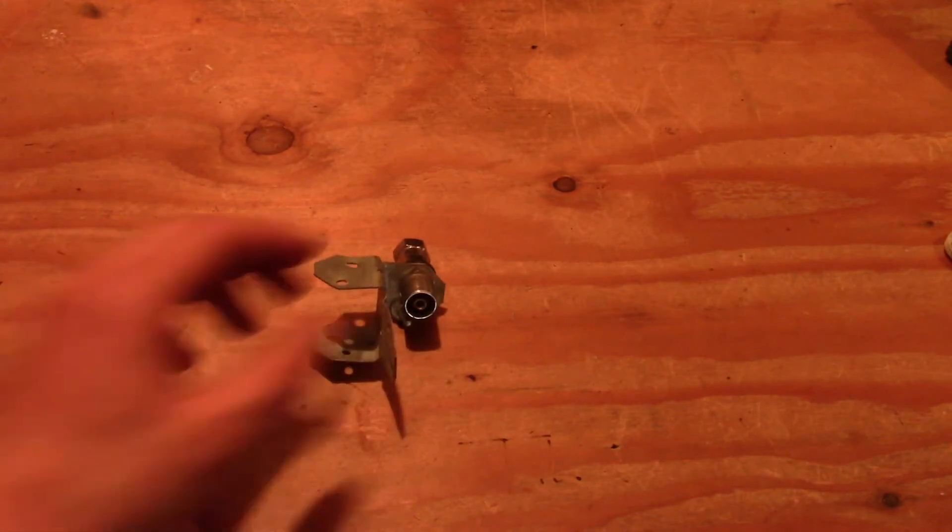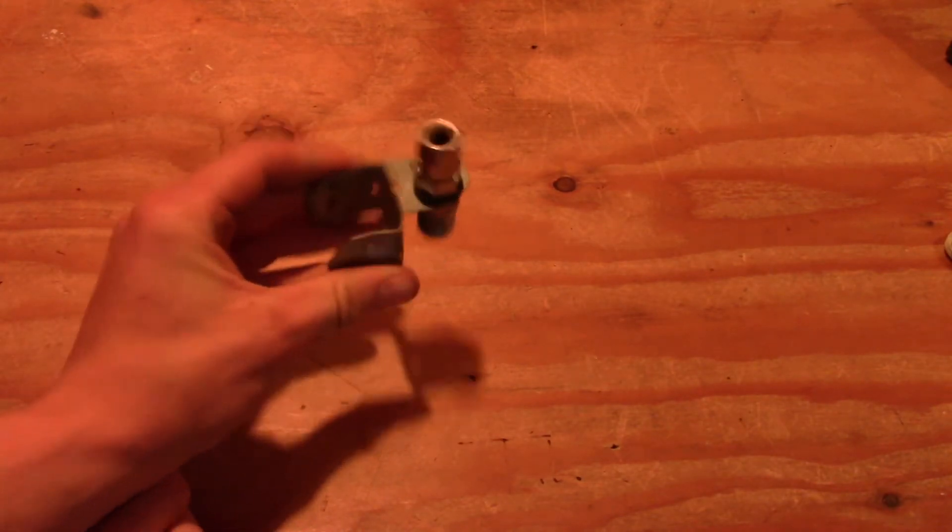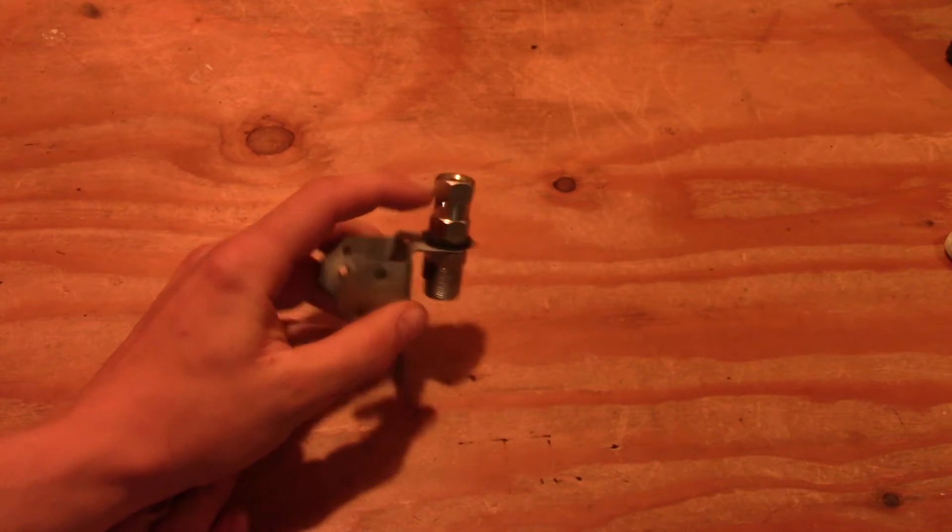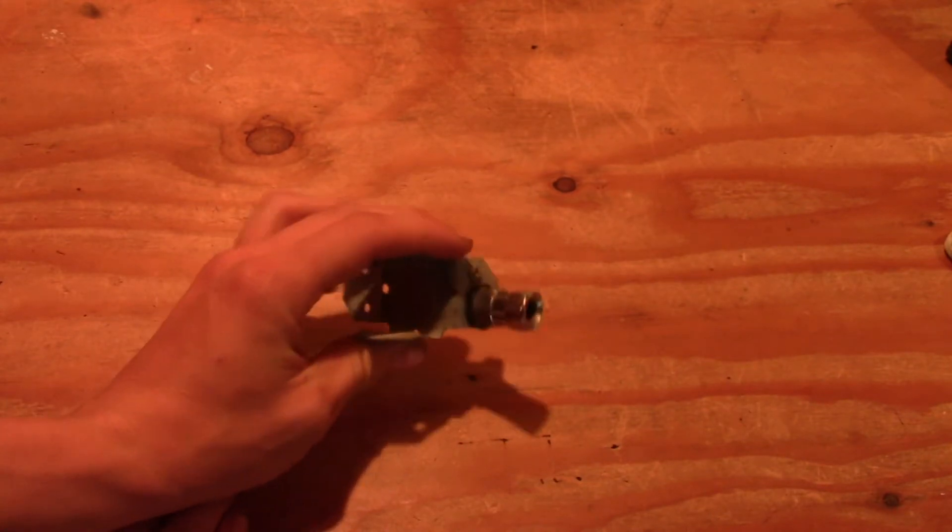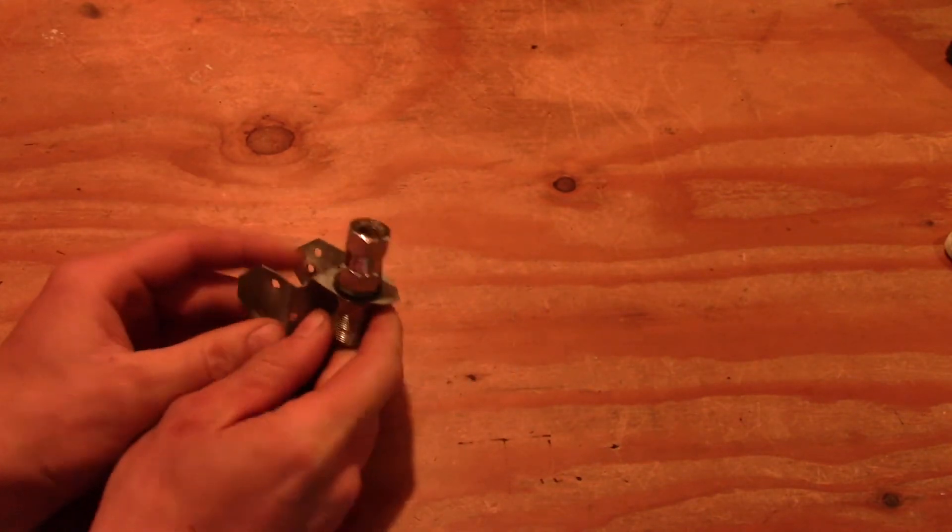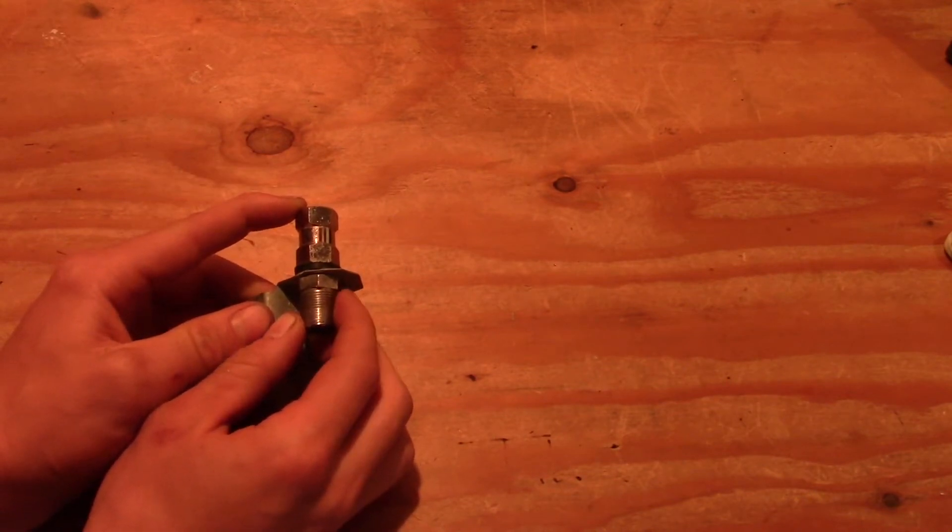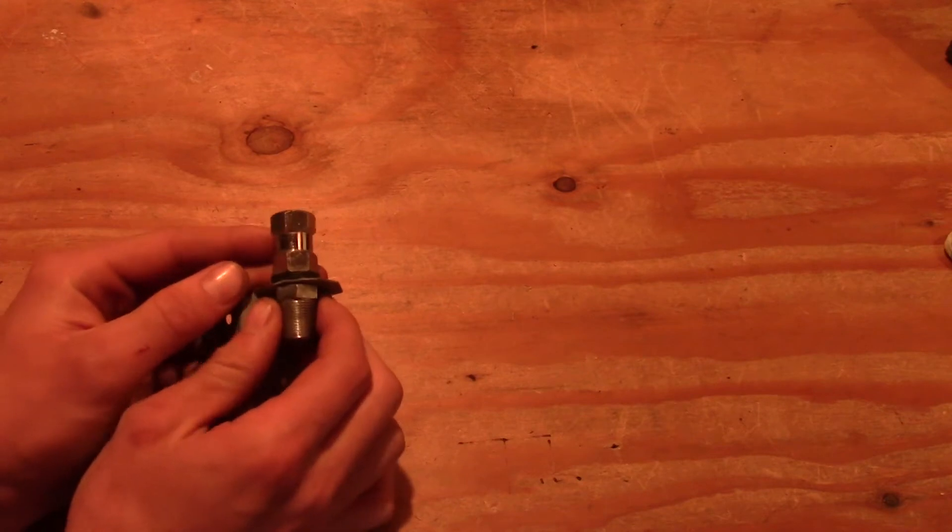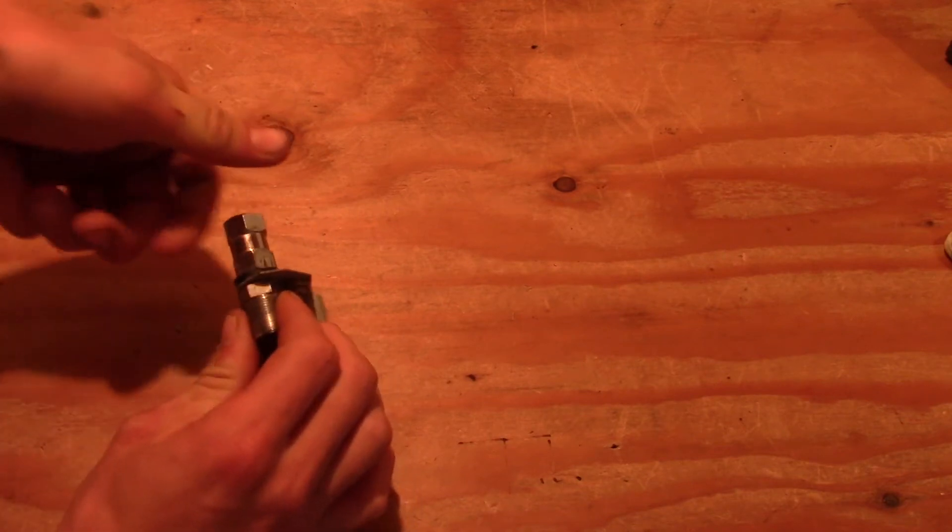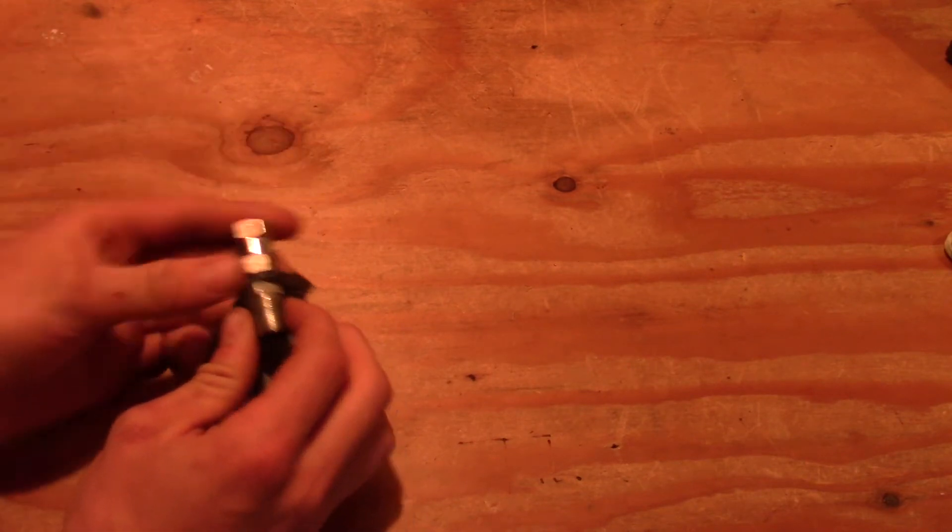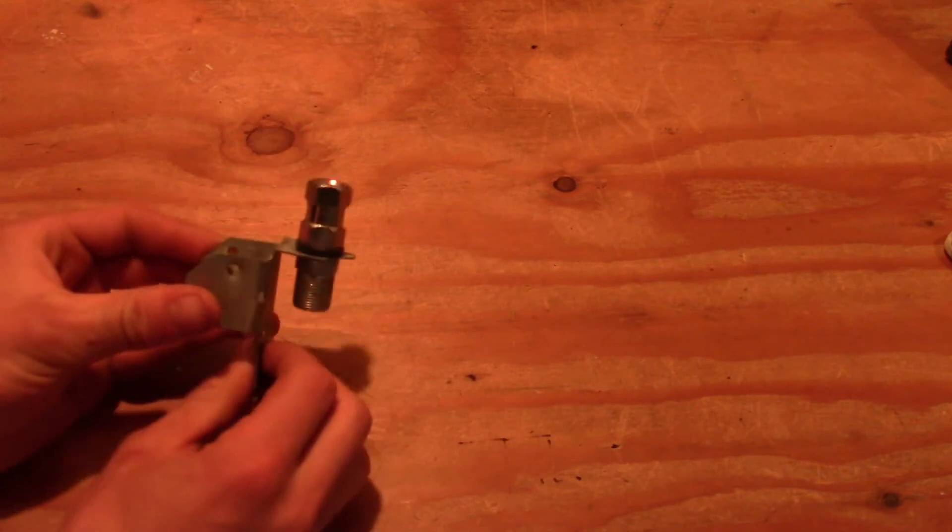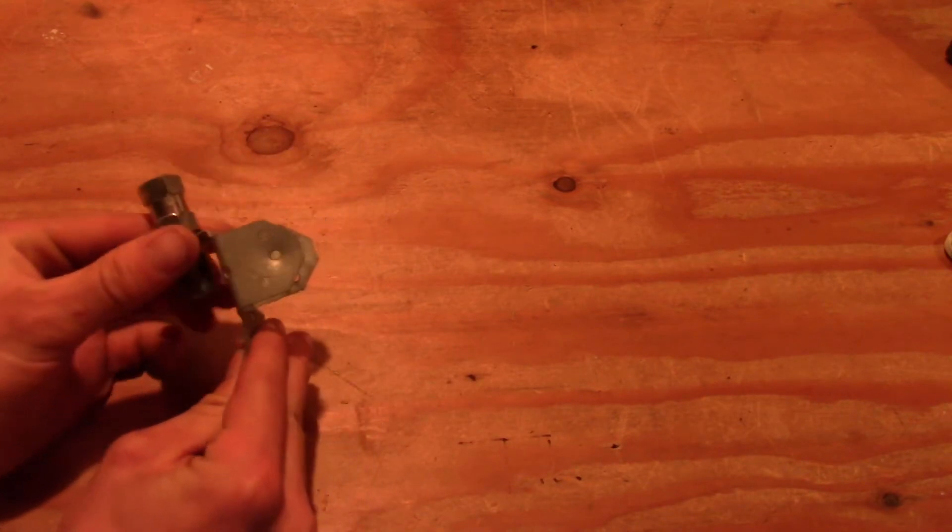All right, so here is the first thing I want to show you, and what this is, is just a cleverly designed mount for an MFJ hamstick or any other 3/8-24 mount antenna. How this works is, this is just an SO239 to 3/8-24 barrel, and it is a chassis mount, and what I have is it is screwed through this multi-angle plate here.